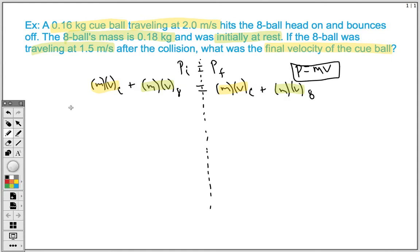The mass of my cue ball, I know, is 0.16 kilograms. And its velocity, we know, initially was 2.0 meters per second. Now that's going to get added to the mass of the 8 ball, 0.18 kilograms. And we know that it was not moving, so it has a velocity of 0.